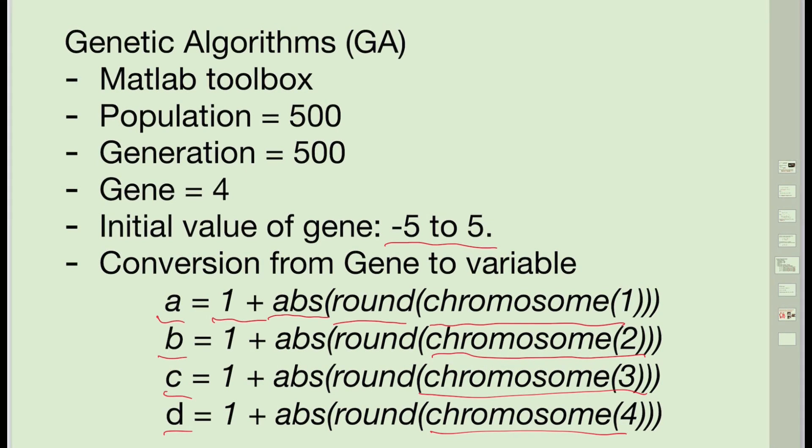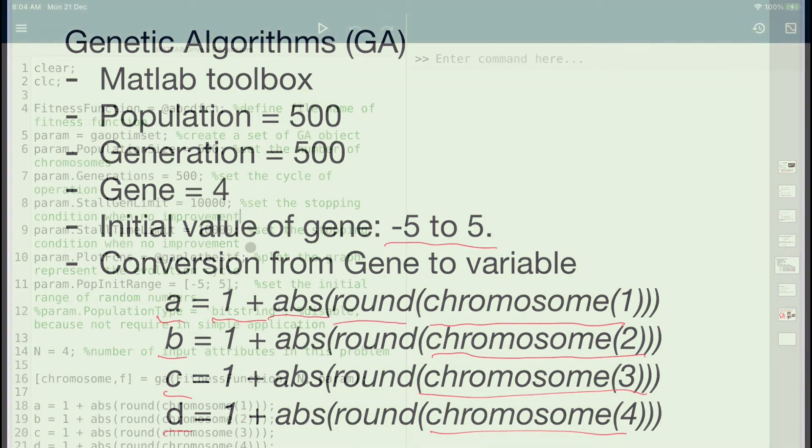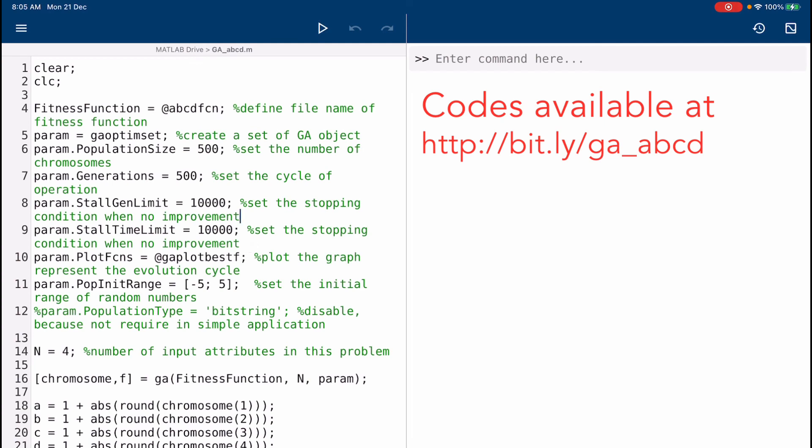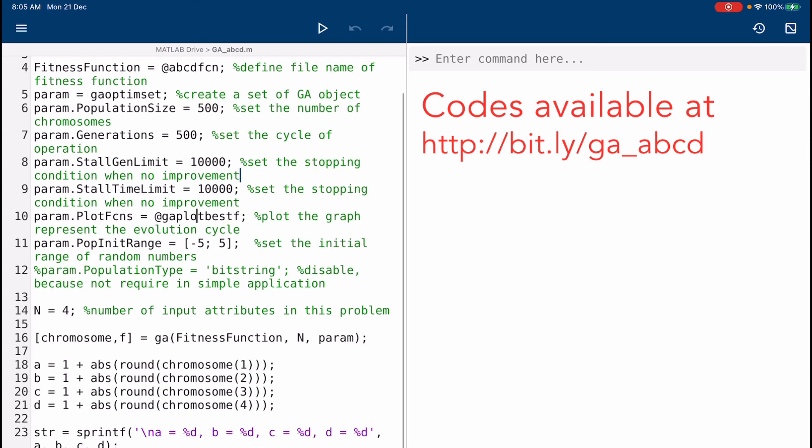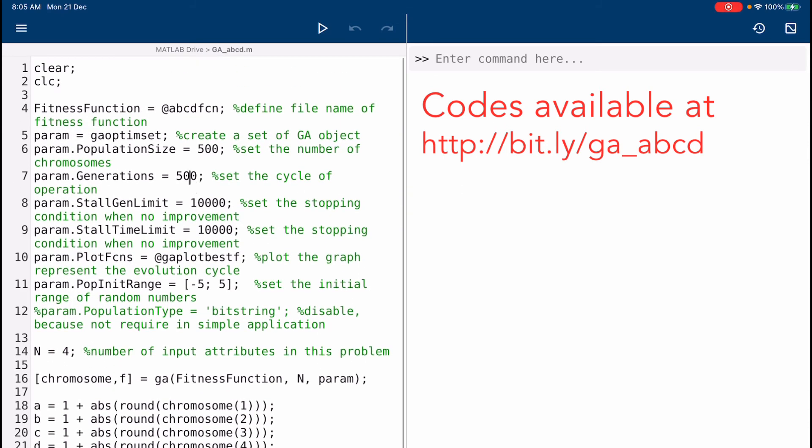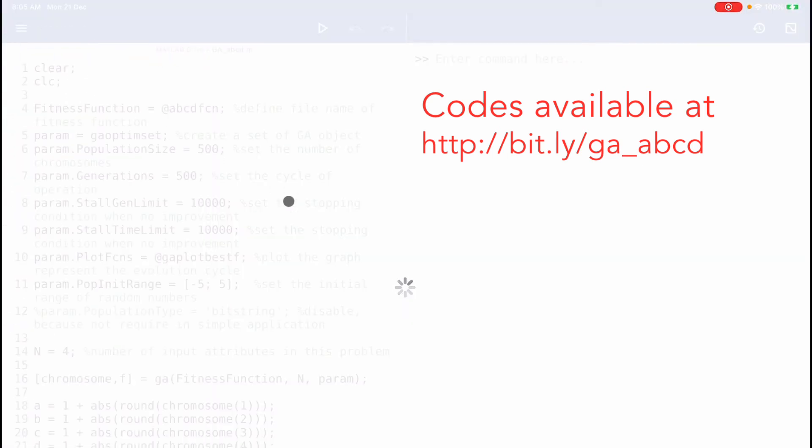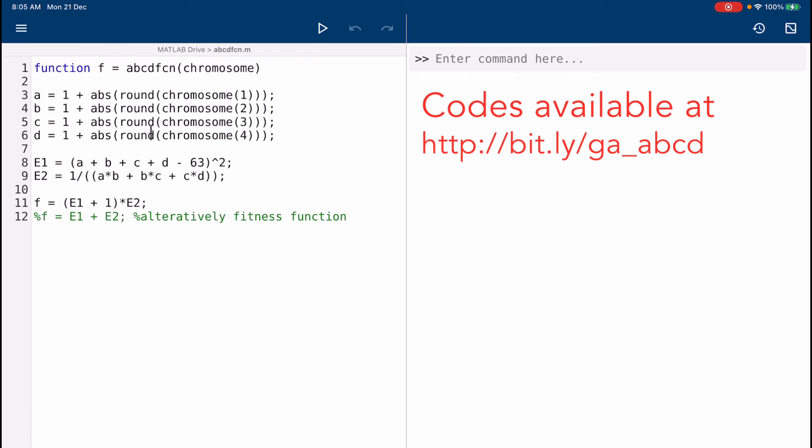Let's see the code in MATLAB. Once we have a, b, c, d well-defined, there are two MATLAB files in this example. First is ga_abcd.m - this is the file we're going to run. Meanwhile, there is a fitness function file called abcdfcn. It is a function we write for MATLAB to evaluate our fitness. As discussed, we will extract the a, b, c, d four genes from the chromosome by applying the round, the absolute value, and plus one to ensure that a, b, c, d are positive integers, minimum is one.